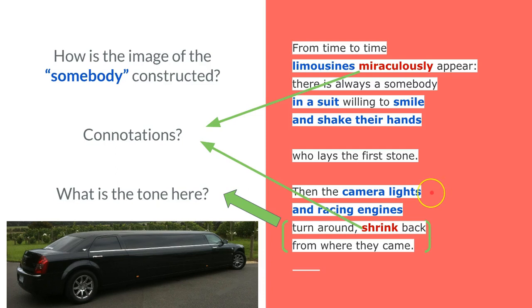But why are they there? Well, the camera lights are taking pictures of them laying the stone. And so instead of this being a meaningful breaking ground and a meaningful start to the process of building these houses, it seems to be little more than a publicity stunt. And the camera lights and the racing engines turn around, shrink back from where they came. Interesting use of the word—they miraculously appear as if from nowhere, and then they shrink back from wherever they came.